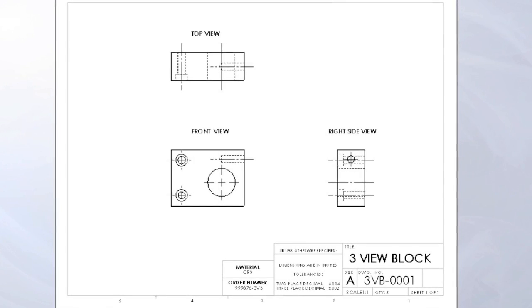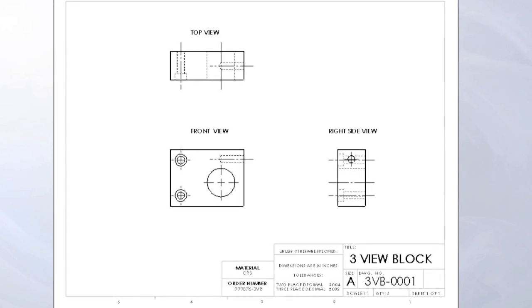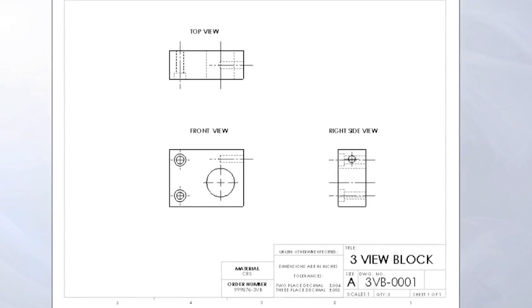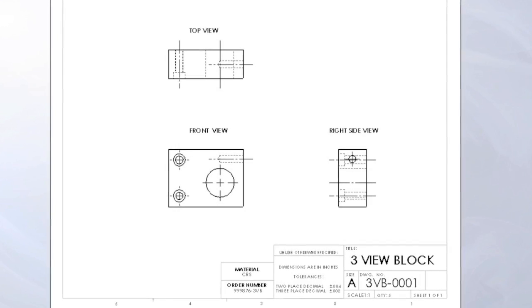The most common group of views that are used on three-view prints are the front, top, and right side.